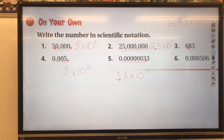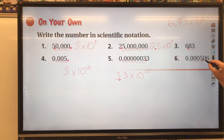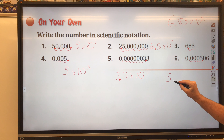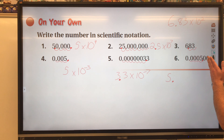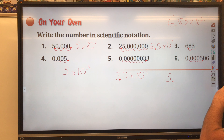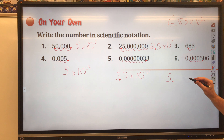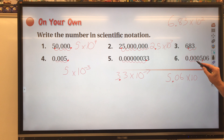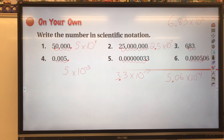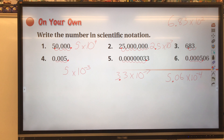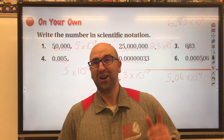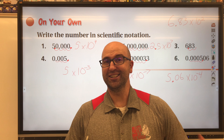One last one — we move the decimal so the 5 is to the left of the decimal. We move it one, two, three, four places. Since there's a 6 after the zeros, we can't drop it — so we write 5.06. That gives us 5.06 times 10 to the negative fourth power.